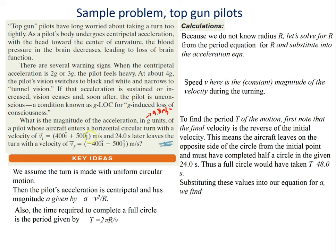The aircraft enters a horizontal circular turn with a velocity of 400î + 500ĵ m/s, and 24 seconds later leaves the turn with a velocity of −400î − 500ĵ m/s. So it enters the turn going in one direction and leaves with the opposite velocity, meaning it went through half of a turn. We assume the turn is made with uniform circular motion, so the pilot's acceleration is centripetal acceleration directed toward the center. The time to complete a full circle is given by the period, which is just a rearrangement of our earlier equation.